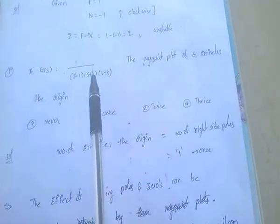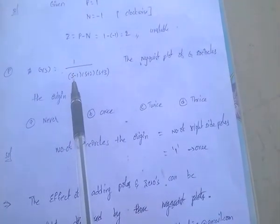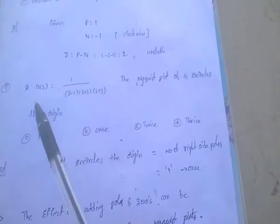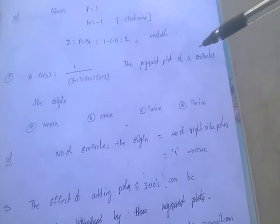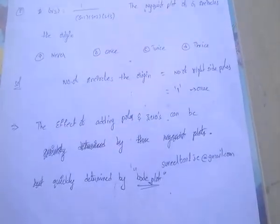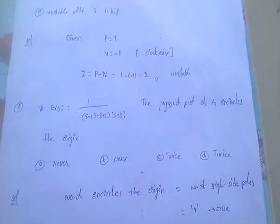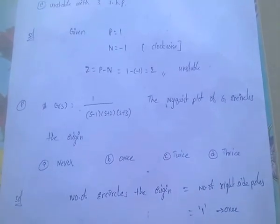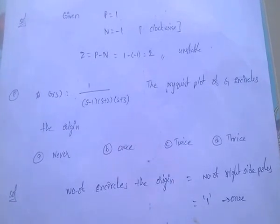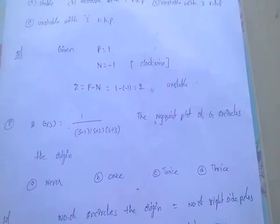For G(S)·H(S) with (S-1)(S+2)(S+3) in the denominator: S - 1 means there is one right-side pole, so it encircles once. This will be the last class on control systems. Thank you.